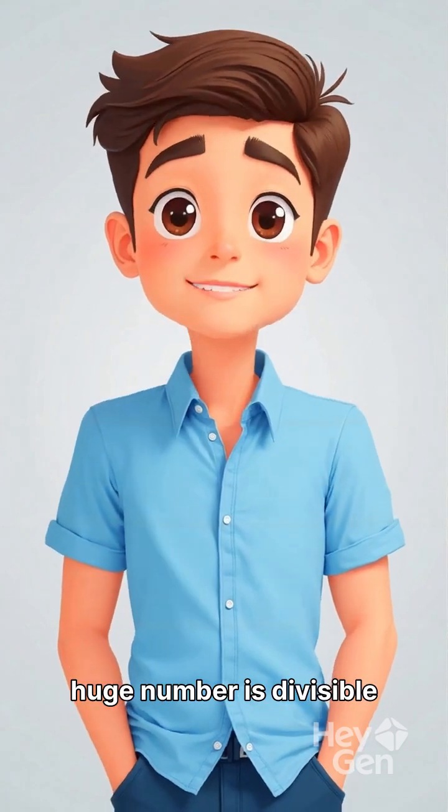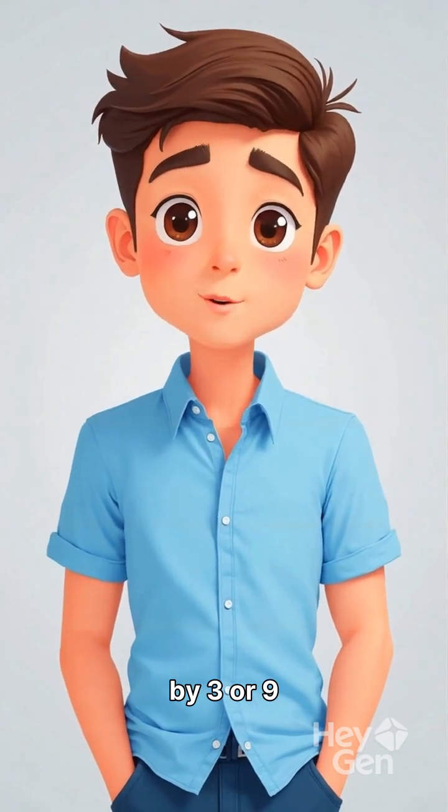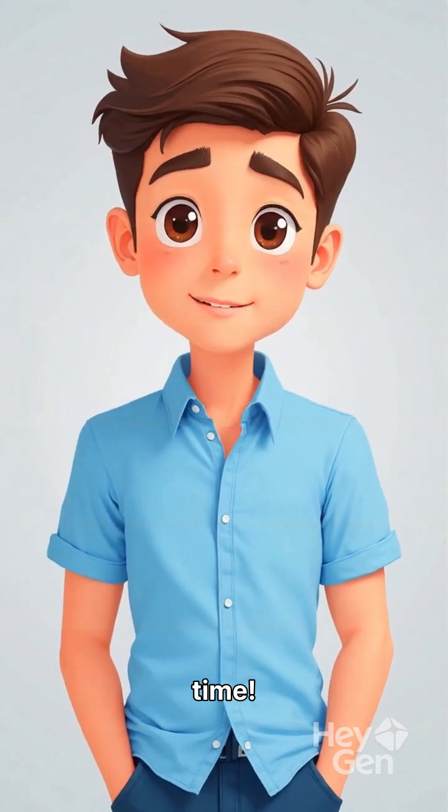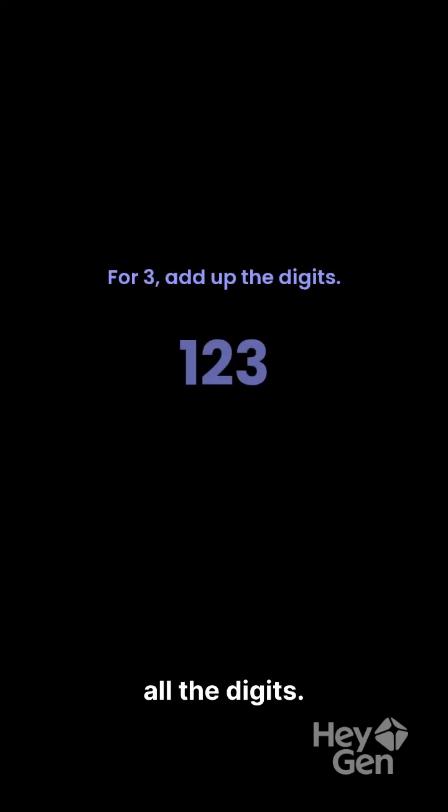Ever wondered if a huge number is divisible by 3 or 9 without dividing? Here's a simple math secret that works every time. For 3, just add all the digits.